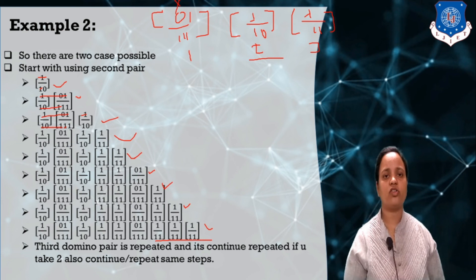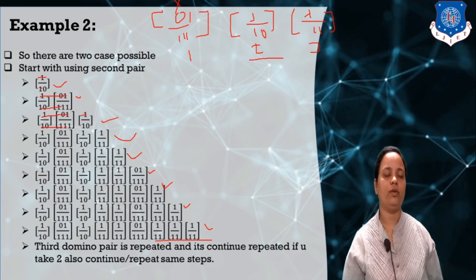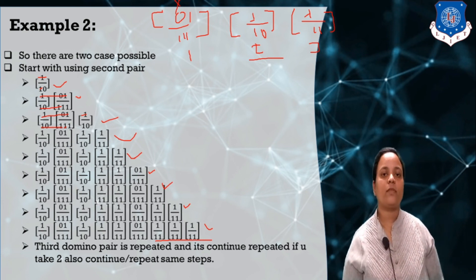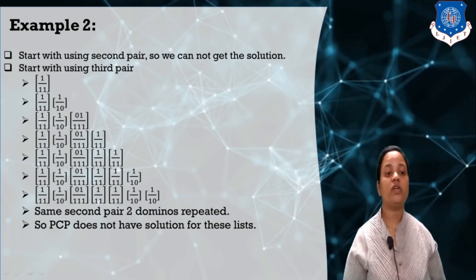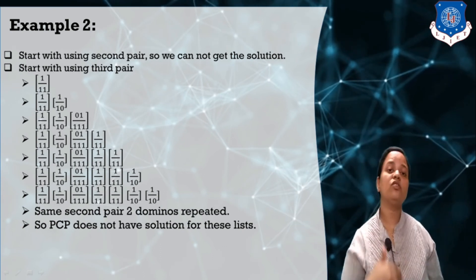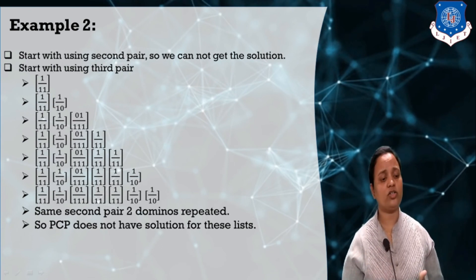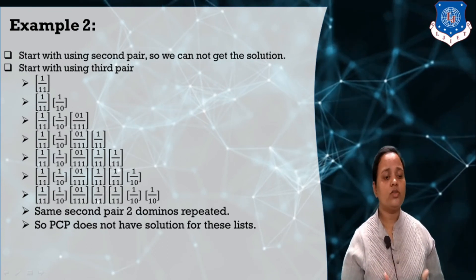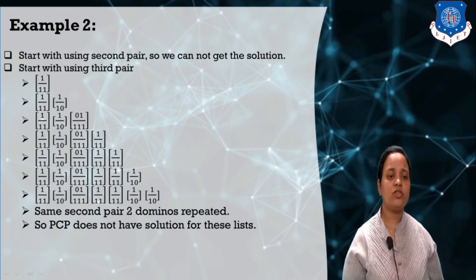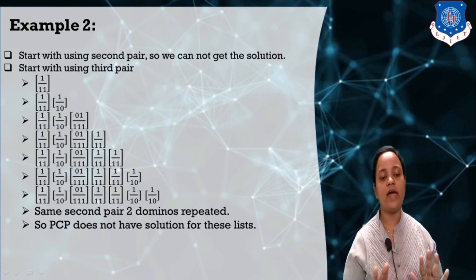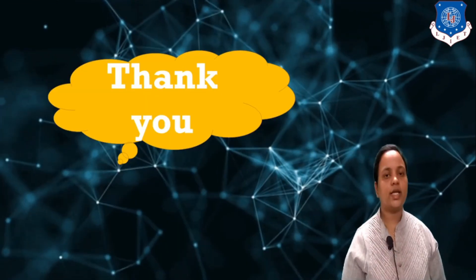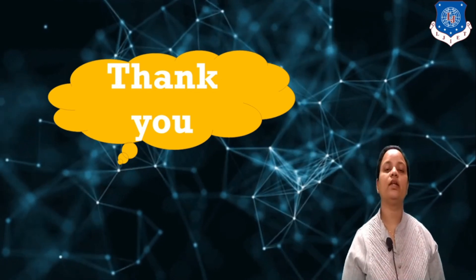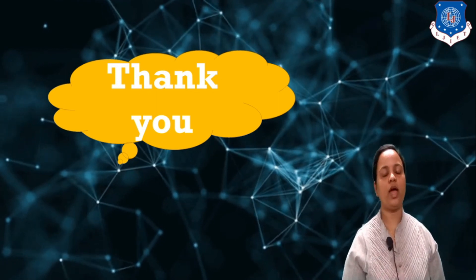Whether we start with the second pair or the third pair, we cannot get a solution. This Post Correspondence Problem does not have any solution — it is an unsolvable problem. I hope this concept is clear to you. Thank you all.